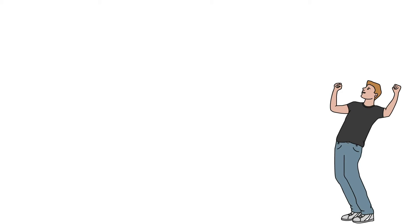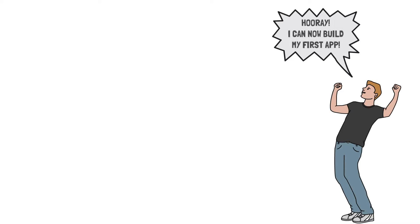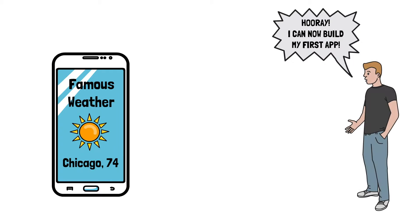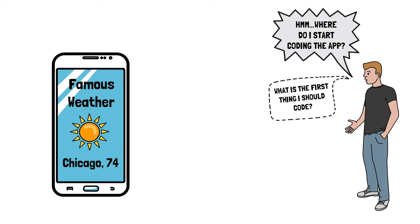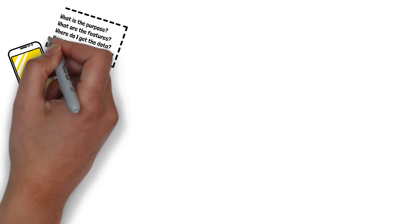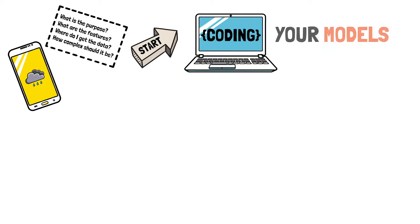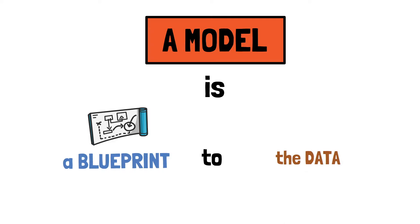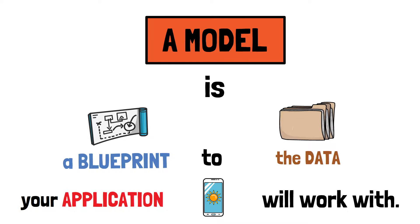So you finish some Flutter tutorials and you feel confident of what you have accomplished. You want to build your own first app now. You think of an idea, but then you realize that you don't know where to actually start programming the app. What is actually the first thing you should code? From my experience, I believe that the best way to start your application, after you visually and technically designed it, is by coding your models. But what exactly is a model? A model is, as its name implies, a blueprint to the data your application will work with. Let's pretend your application is a brand new weather app.